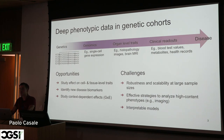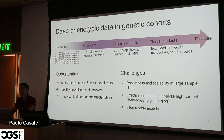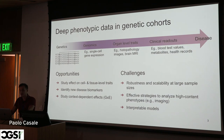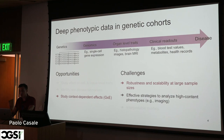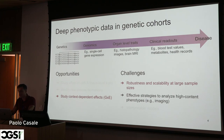These opportunities come along with several challenges. We focus mostly on computational challenges: we need methods that are robust and scalable to handle large sample sizes, effective strategies to analyze high-dimensional phenotypes like medical images, and models that are interpretable — especially for machine learning models applied to statistical genetics problems. In the lab we focus on developing new tools borrowing from statistical methods and machine learning, but today I'll focus on methods to study context-dependent effects, mainly G×E, and robustness and scalability for large biobanks.